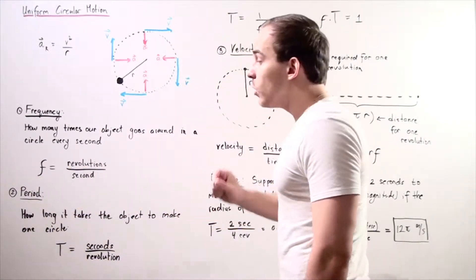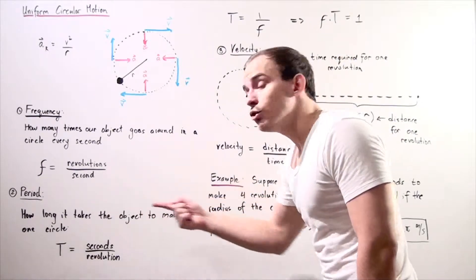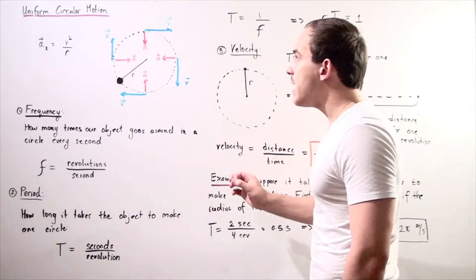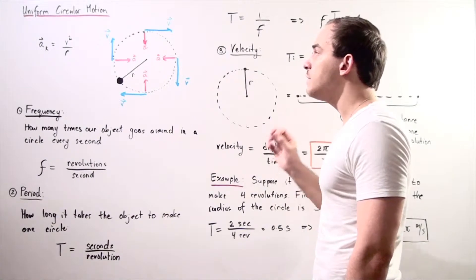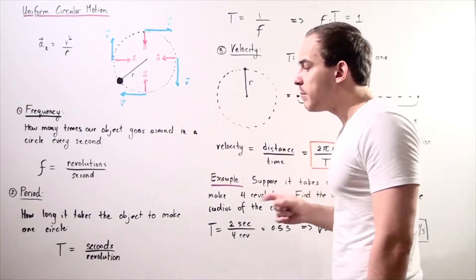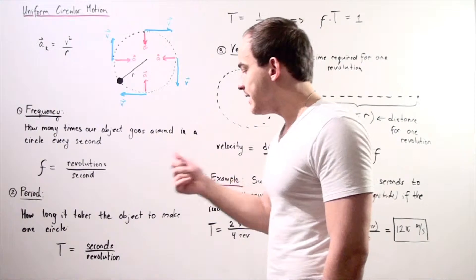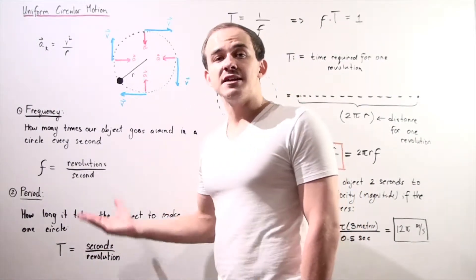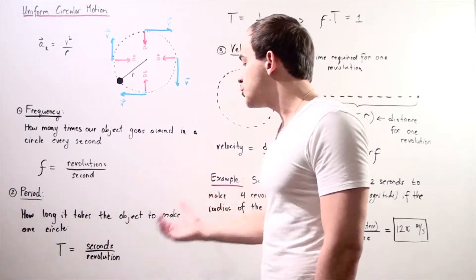What about period? Period tells us how long it takes our object to make one full circle, one full revolution. Period is given by the capital letter T, and it equals seconds divided by one full revolution.